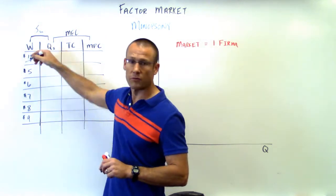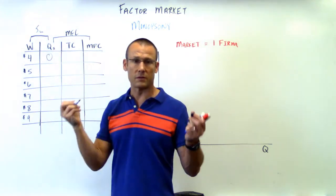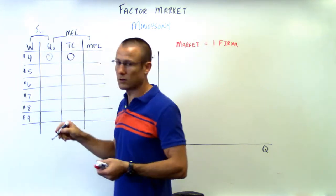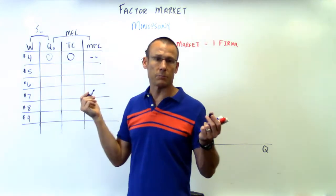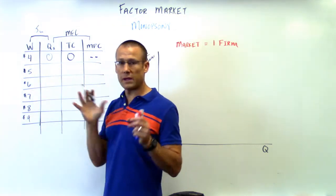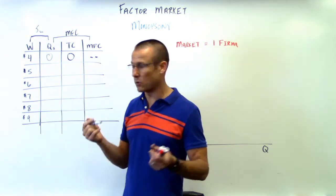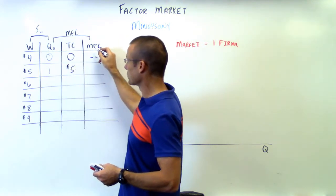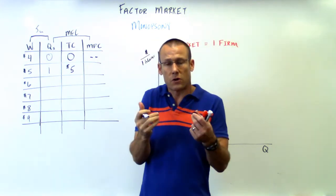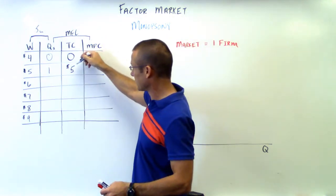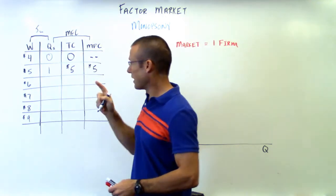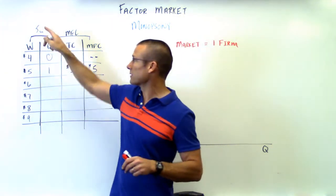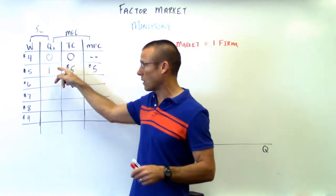At a wage of four, nobody wants to work for us, so the quantity supplied is zero, total cost zero, and marginal factor cost is not applicable. But if we raise the wage to five, we'll get one person — quantity supplied is one, total cost is five dollars, and the marginal factor cost is five dollars (we went from zero to five). At a quantity of one, the wage is five and the MFC is five — the supply curve and MFC curve are at the same point.